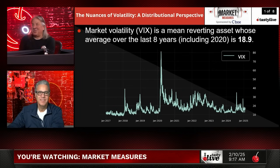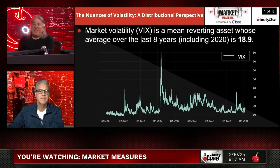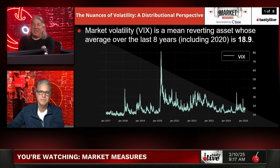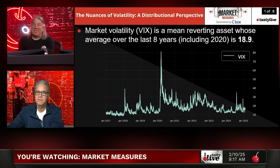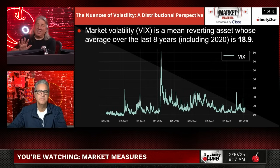Market volatility: the VIX is a mean-reverting asset whose average over the last years, including to 2020, is 18.9. I would have guessed it would have been lower than that — if you asked me over the last eight years, back to 2017, I would have said closer to 17. But when we say the VIX is mean-reverting, it's because it's a math equation.